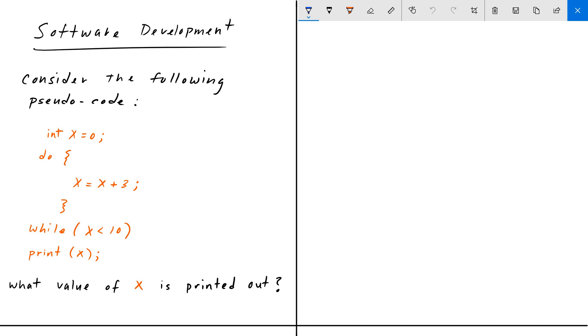And so here in this problem we are given the following pseudocode and we're looking for the value of X that's being printed out at the end. So we have this X that's initialized to zero, it goes through a do-while loop and then we print it out. We want to know what this X is.